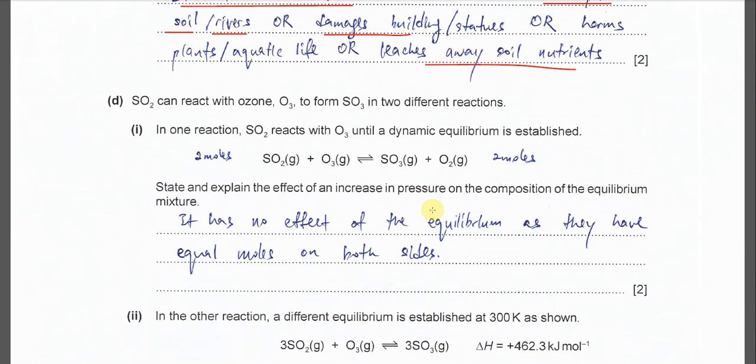D: SO2 reacts with ozone to form SO3 in two different reactions. This is the first reaction. SO2 with O3 forms SO3 and O2. One mole plus one mole, two moles. One mole plus one mole, two moles. State and explain the effect of an increase in pressure to this composition of the equilibrium mixture.